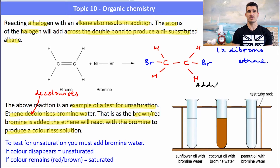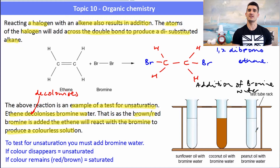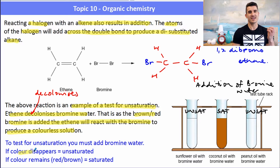To test for unsaturation, add bromine water (Br2 liquid). If a double bond is present, it reacts to produce a colorless compound — the red-brown color disappears. If the compound is saturated, the red-brown color remains. In summary: color disappears = unsaturated; color remains red-brown = saturated alkane.